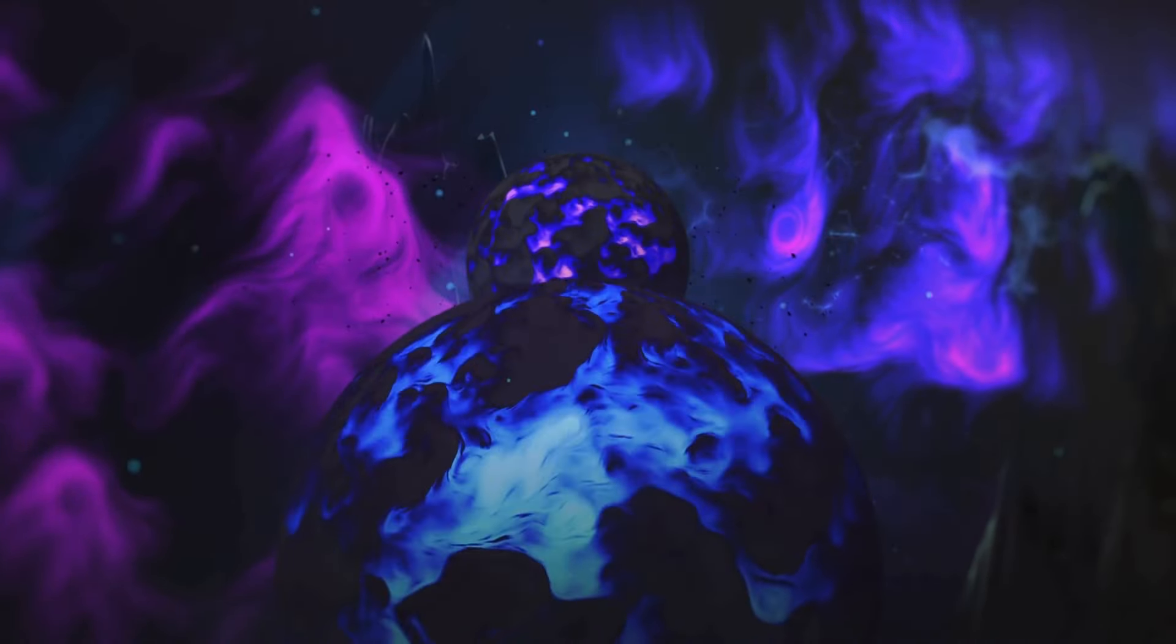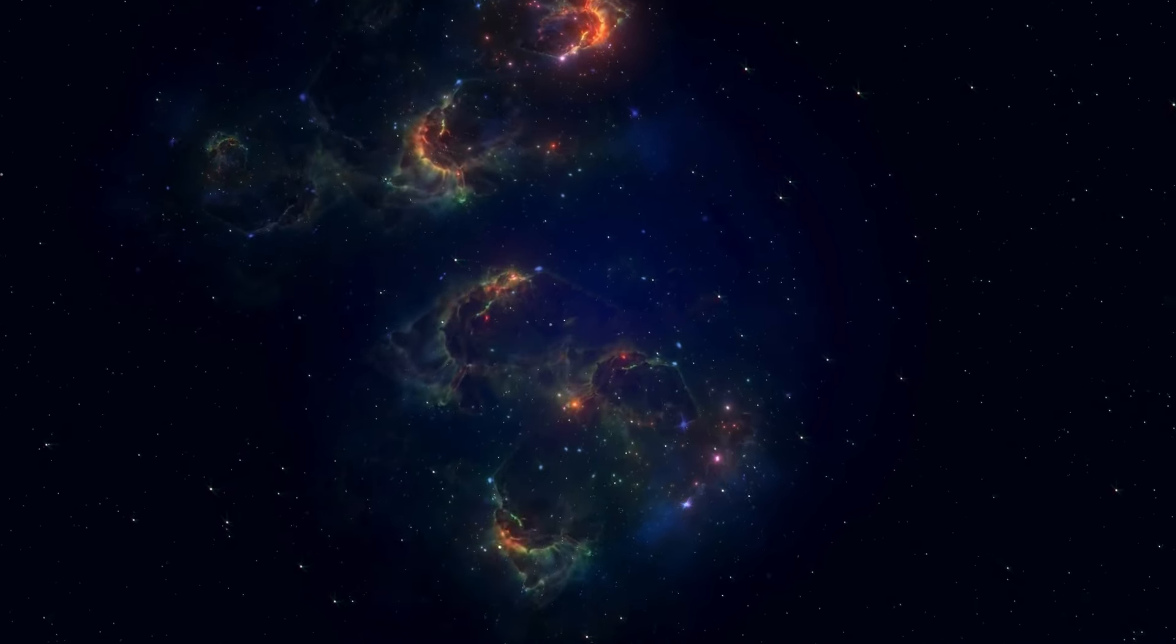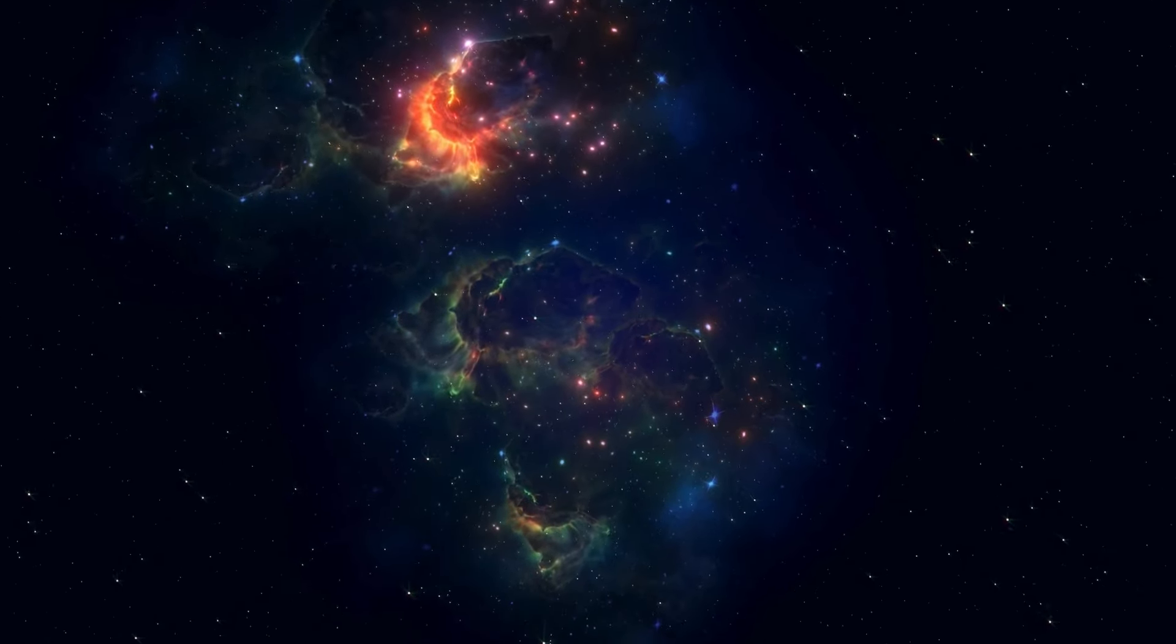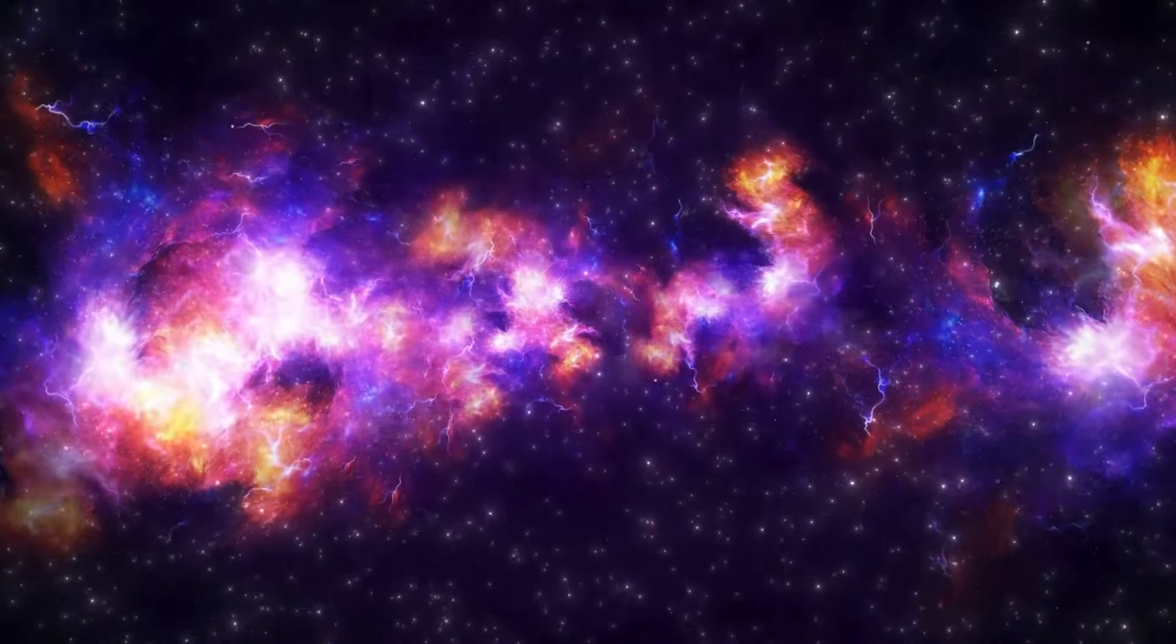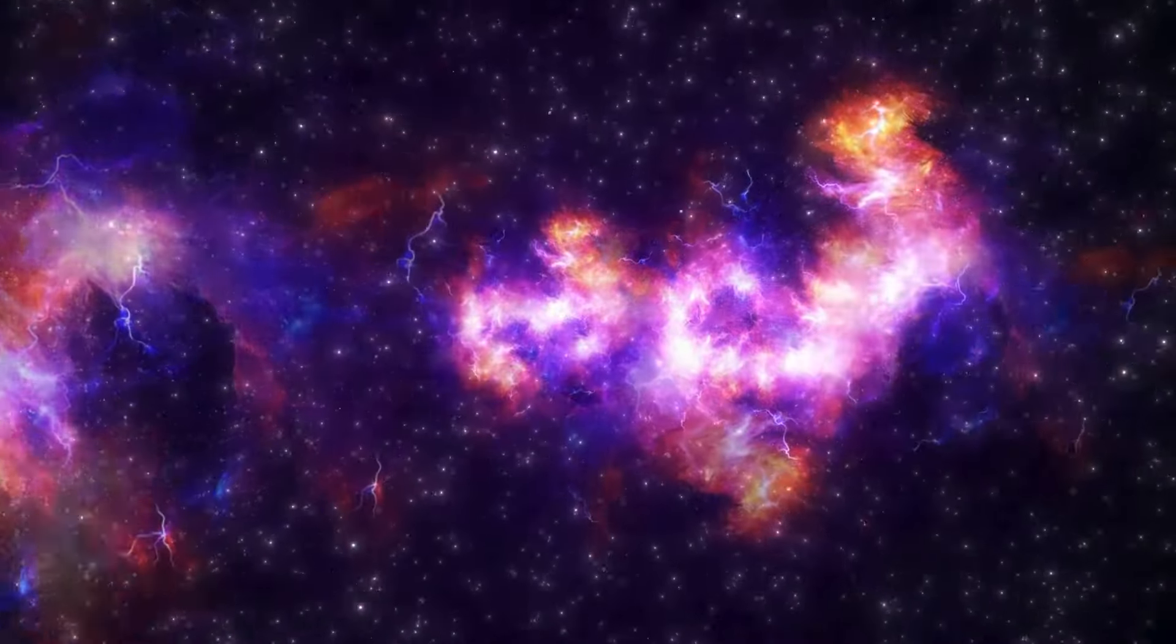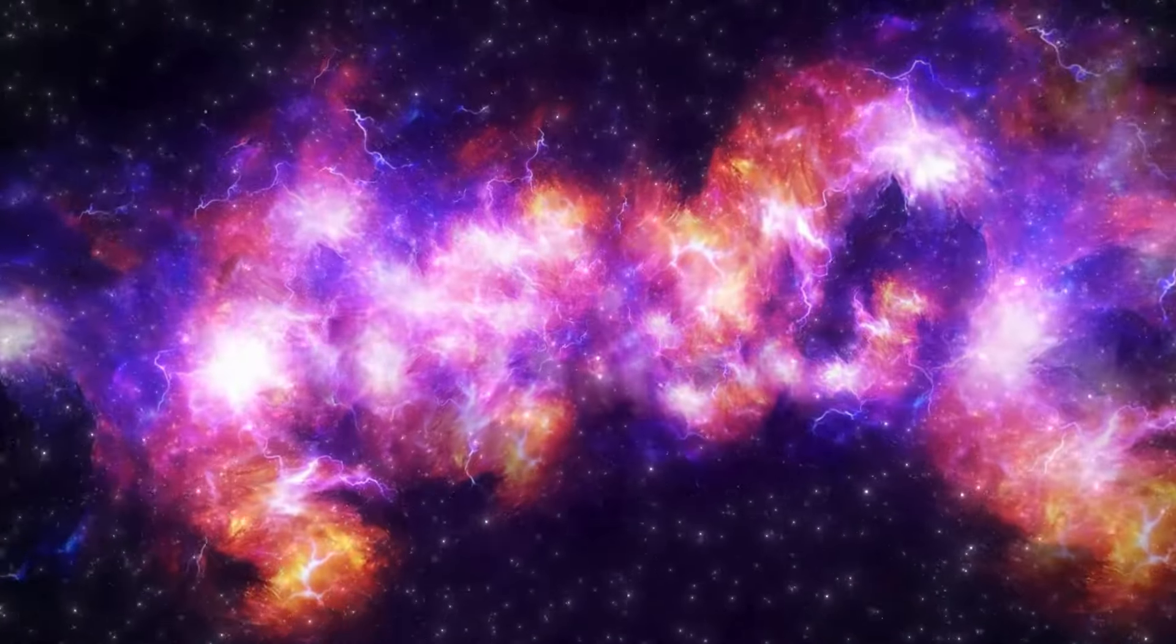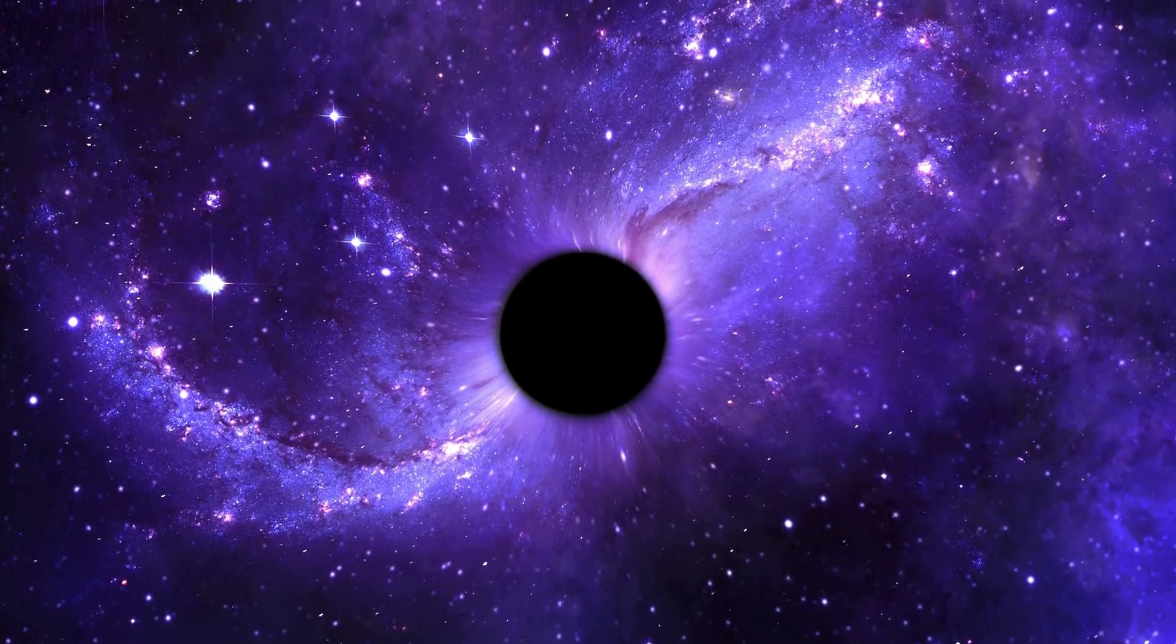As a red supergiant, Betelgeuse is classified as one of the largest and most monstrous types of stars. Its recent unpredictable fluctuations in brightness have sparked theories that it is preparing for a supernova. When a star like Betelgeuse reaches the end of its life, its core collapses under its own gravity, leading to a massive explosion that releases an enormous amount of energy, radiation, and cosmic material into space.